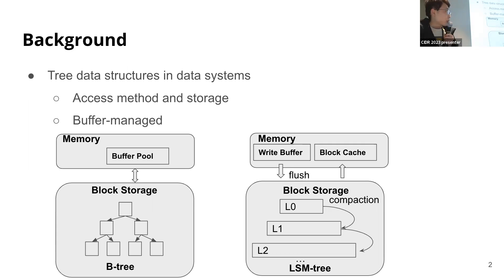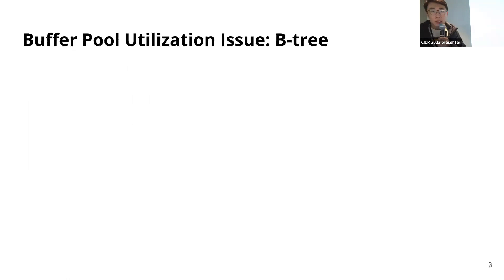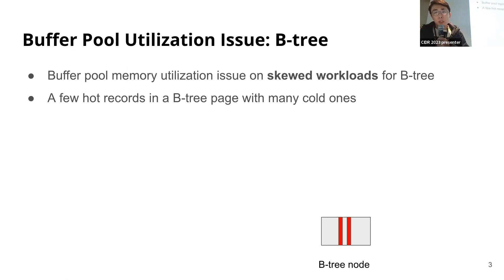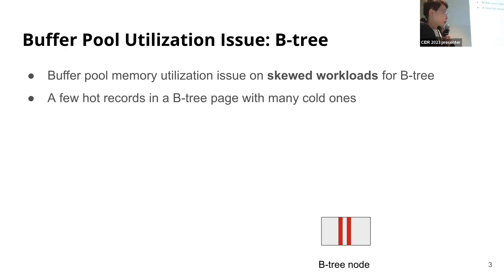Its modern implementation also comes with a read-only buffer pool or block cache to cache the hot data blocks for the files stored on disk. However, when the workload is skewed, a tree data structure running on top of a buffer pool could suffer from poor main memory utilization. For example, in a B-tree, it is entirely possible that a page only contains a few hot records with many cold ones, and these records are typically much smaller than a page granularity.